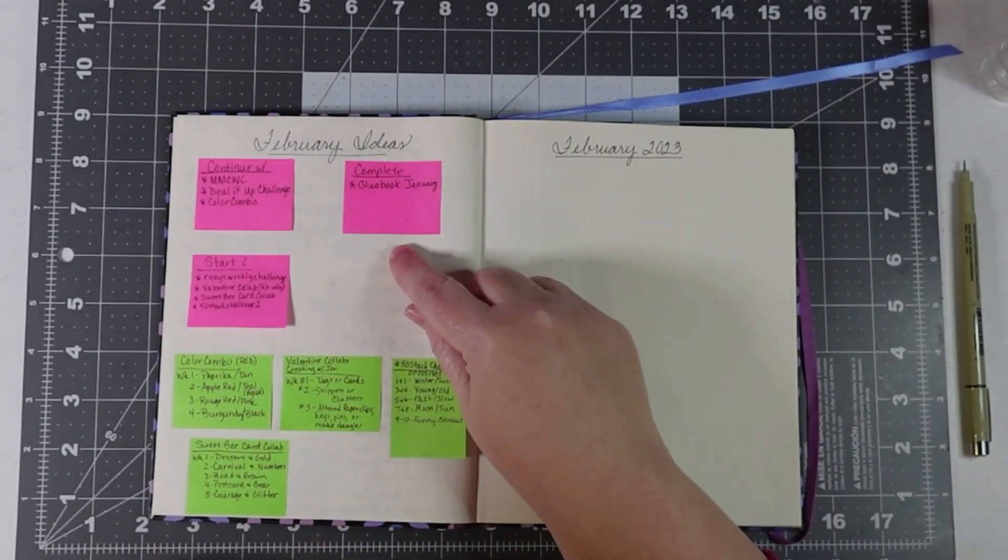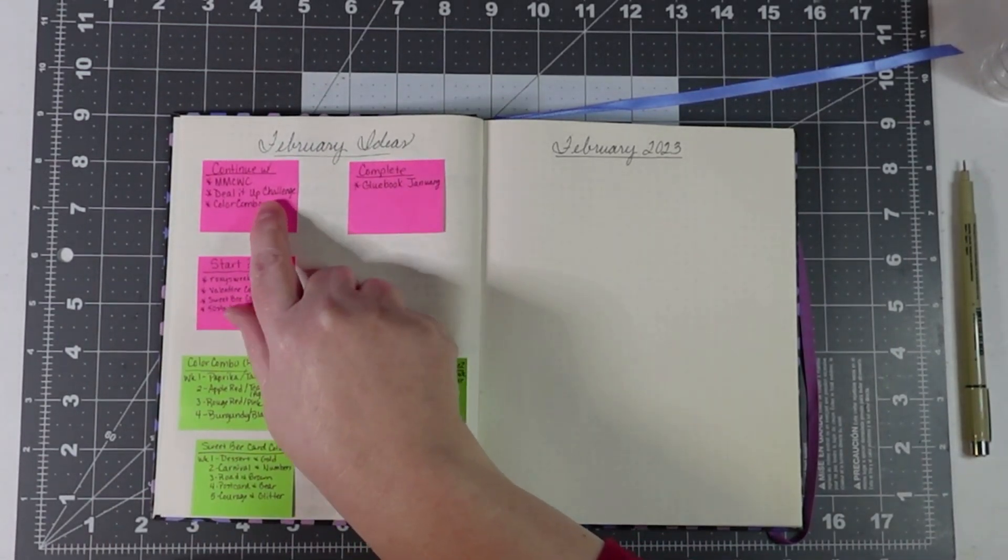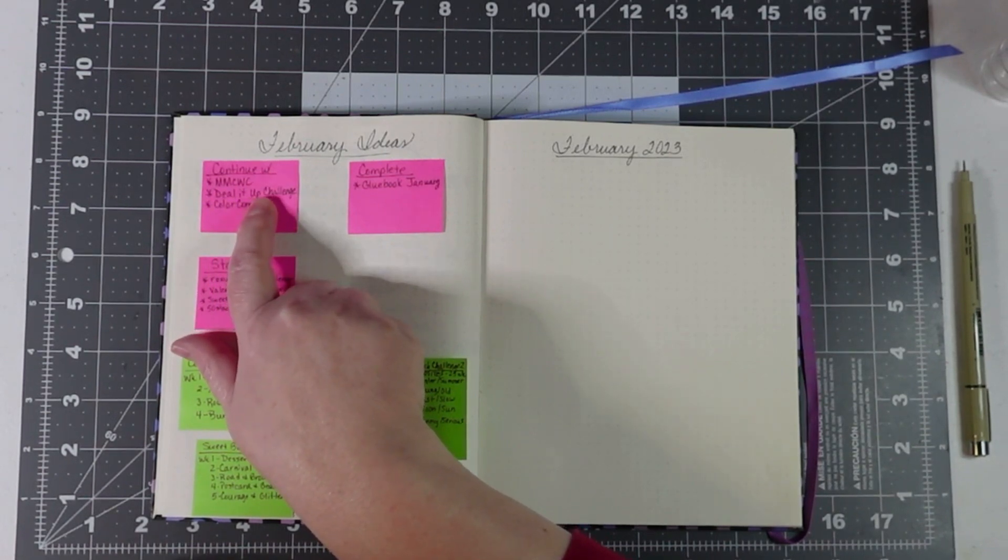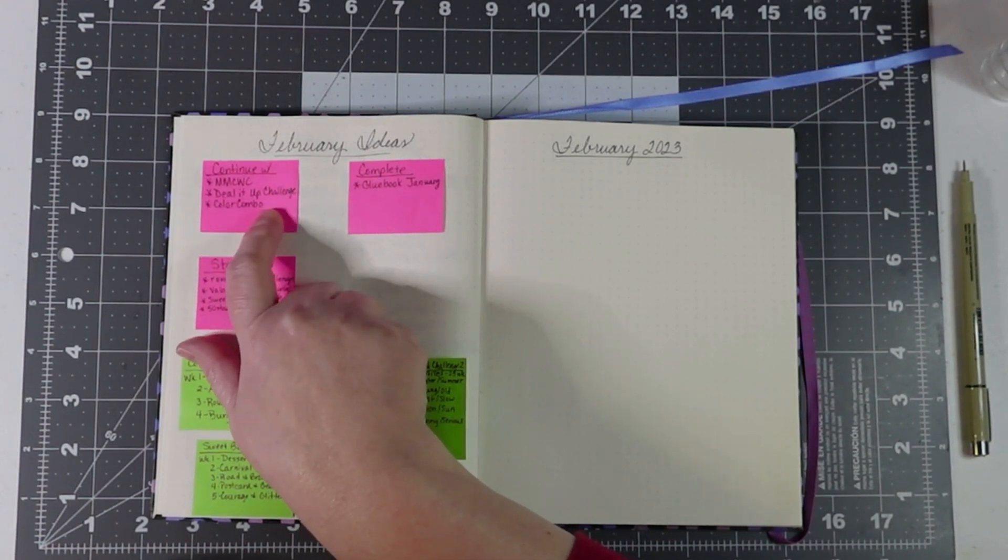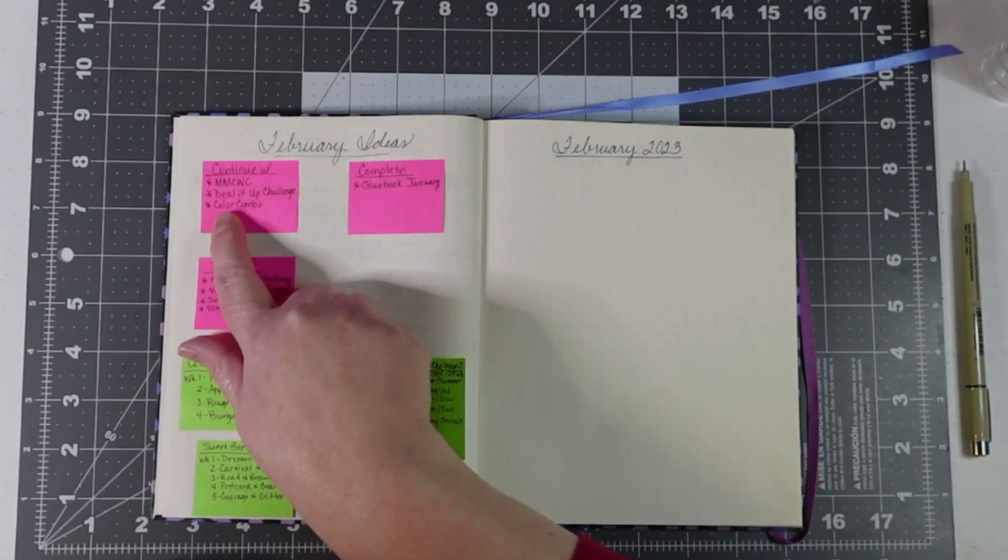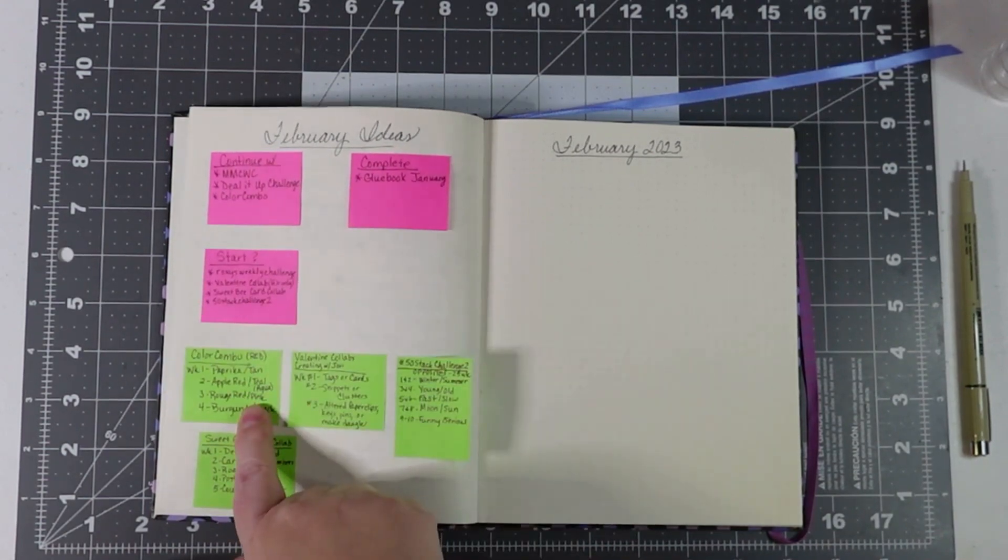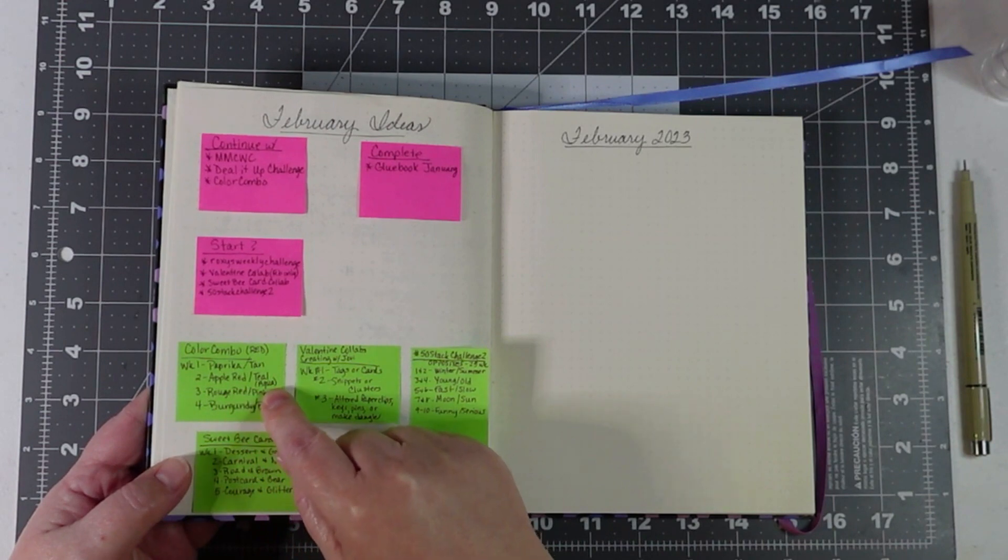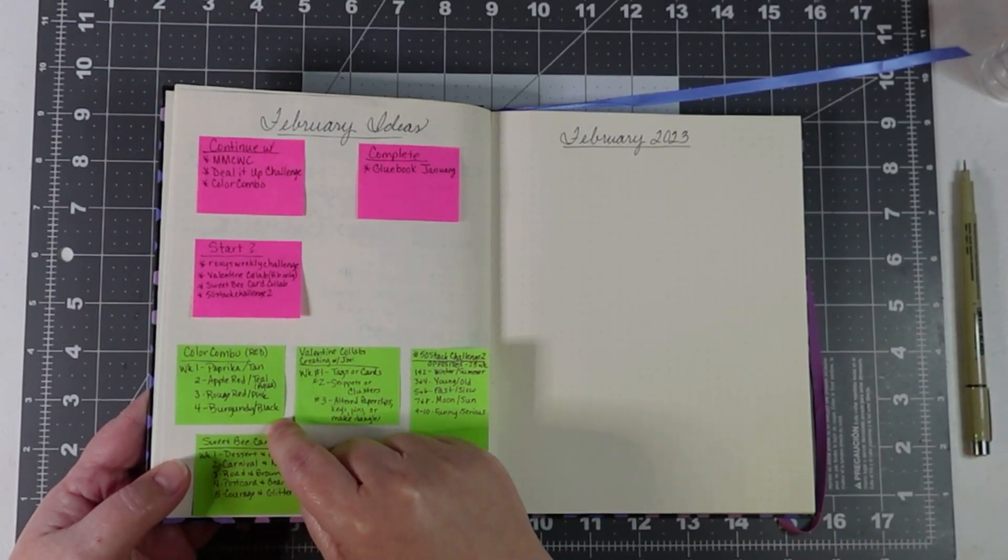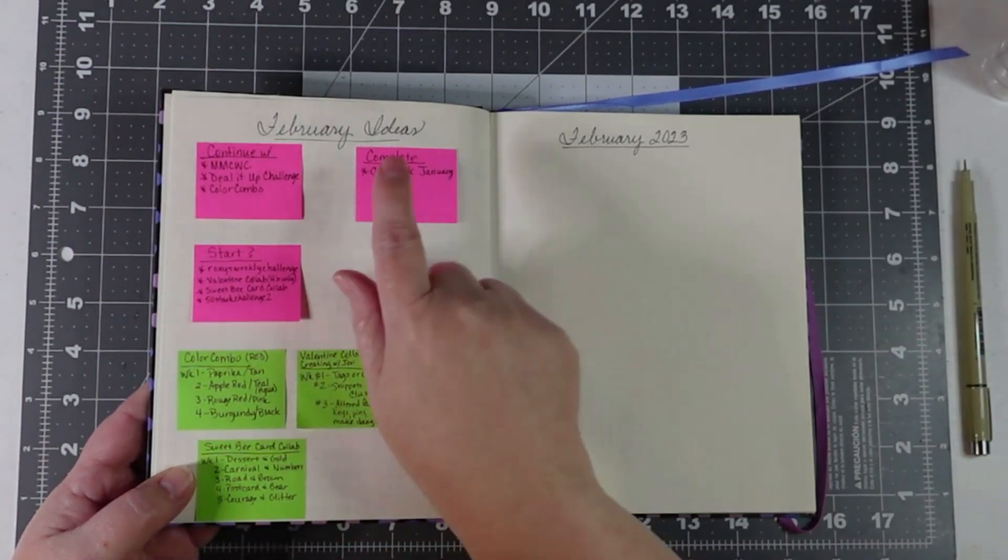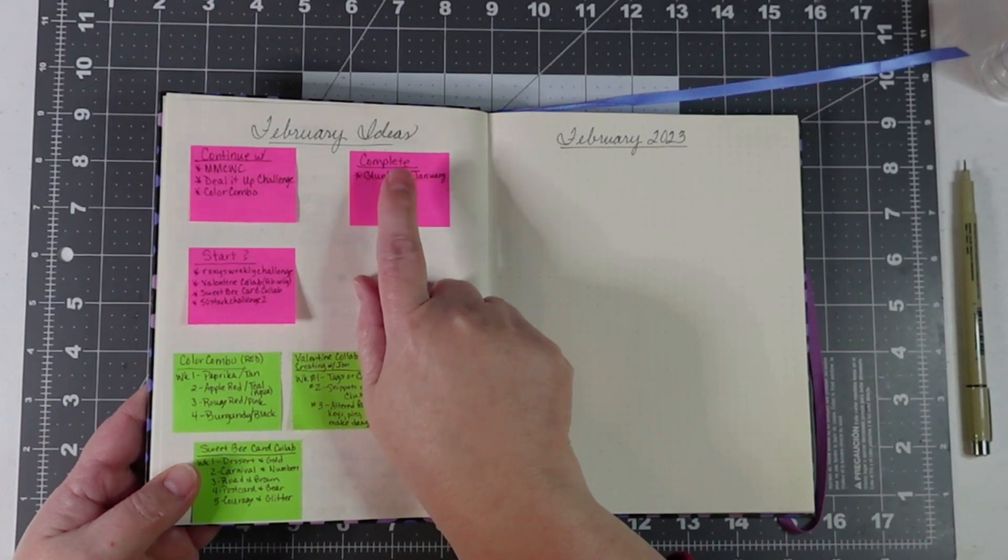That was January. So then I made a February ideas page. I have a sticky note here with things to continue with. I'm going to continue with Margaret Miller, I'm going to continue with Deal It Up Challenge and Color Combo. Now Deal It Up Challenge I don't know those ahead of time. I do know the Margaret Miller because you get the whole set when you purchase it for the entire year. Color Combo she puts it out at the beginning of the month, so I do have the combos for the month of February. Week one will be paprika and tan, then apple red with teal, red rouge with pink, and then burgundy with black. So January was focused on grays, February is focused on reds.